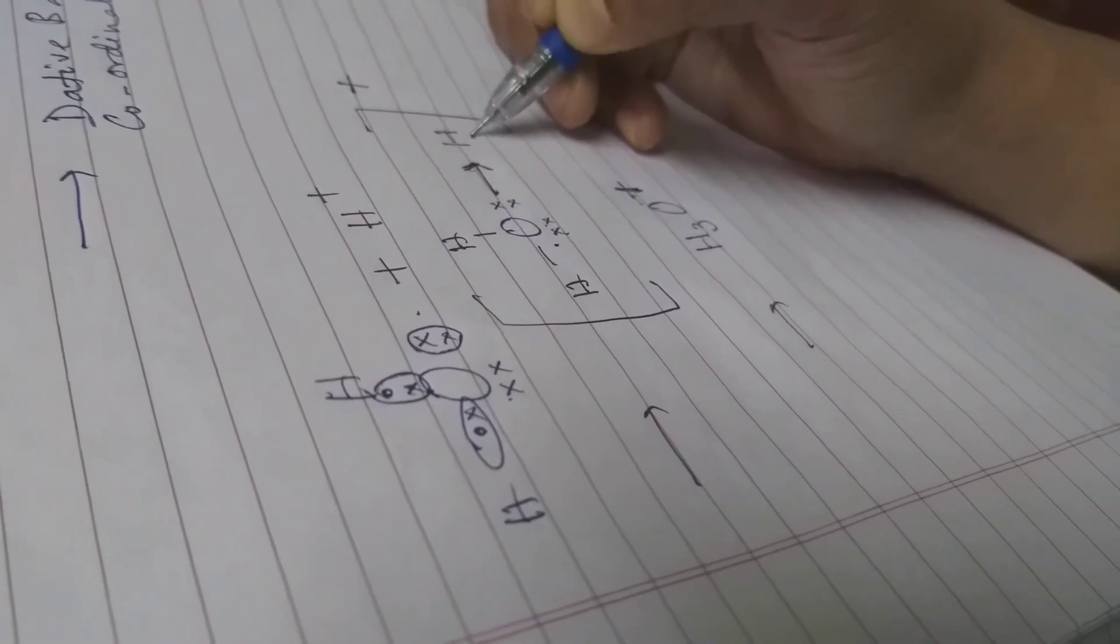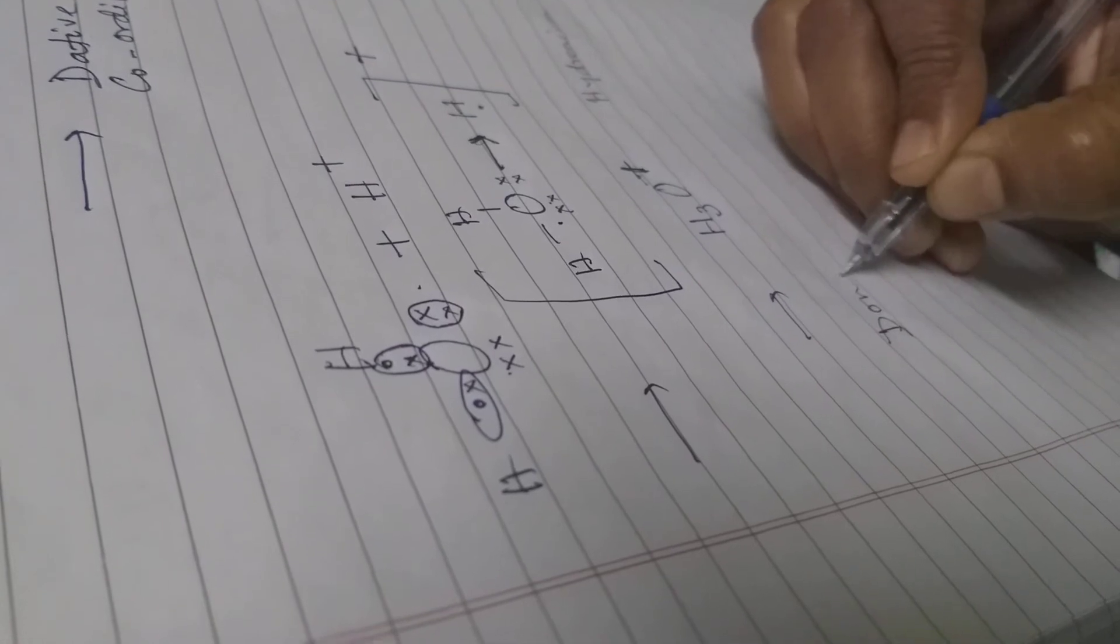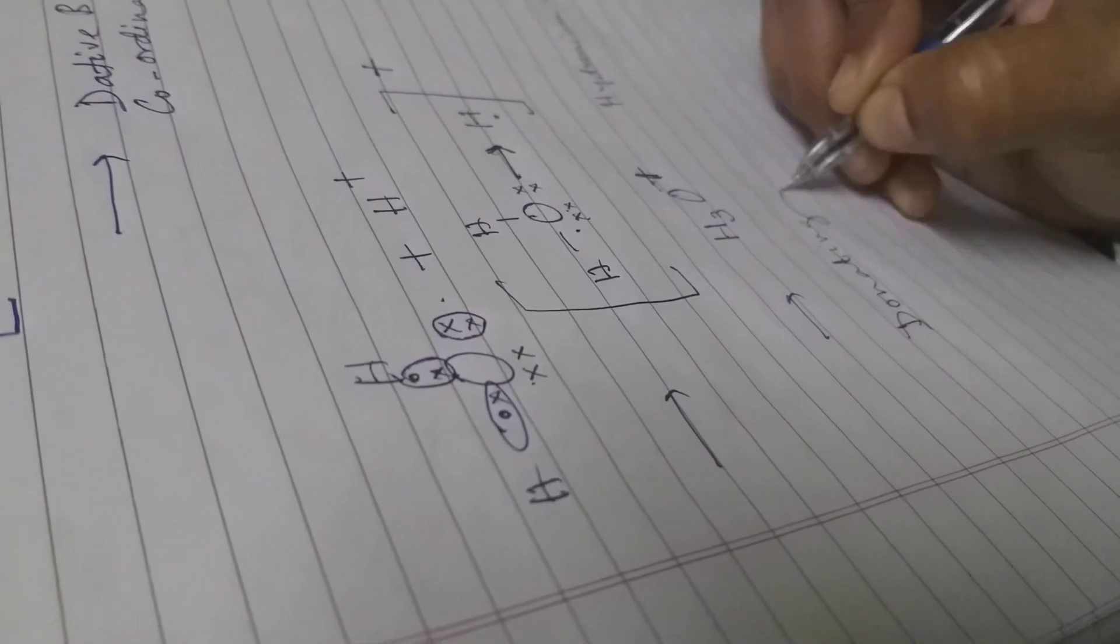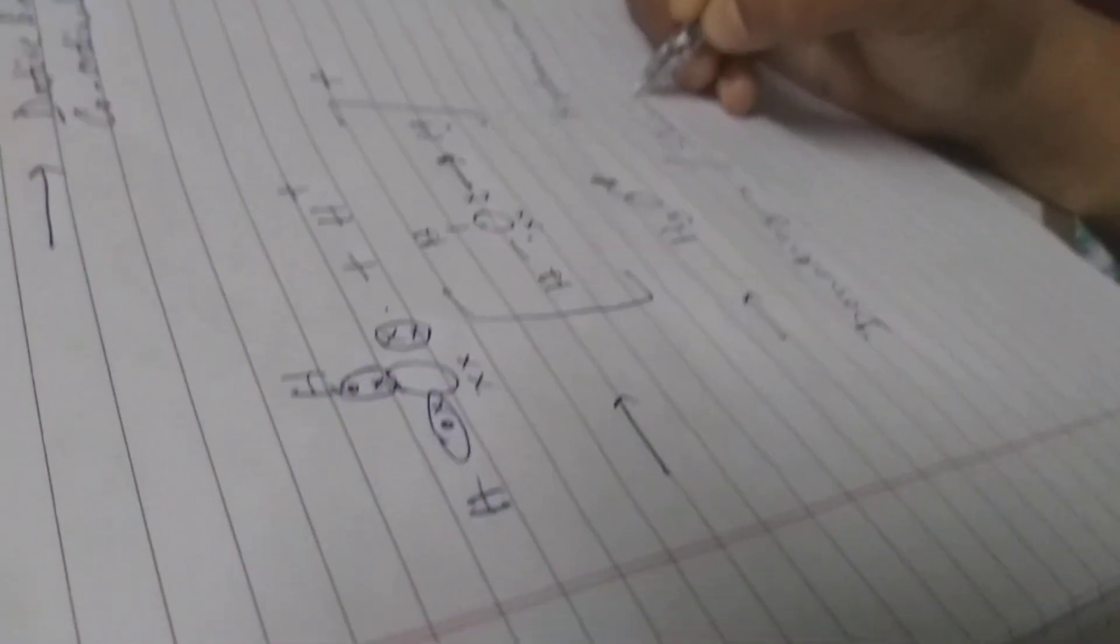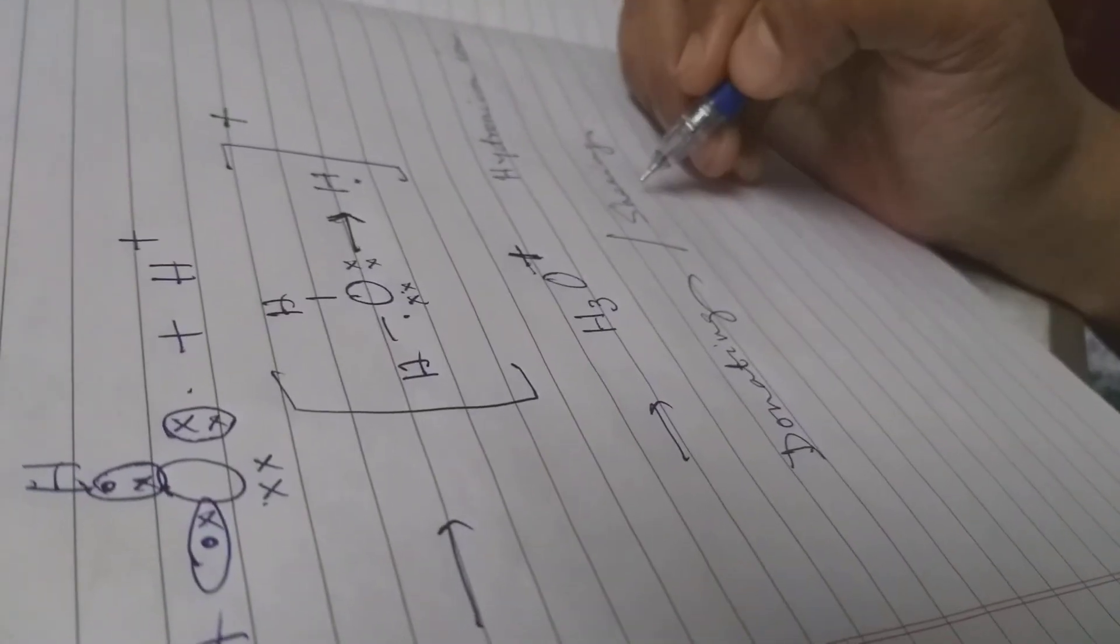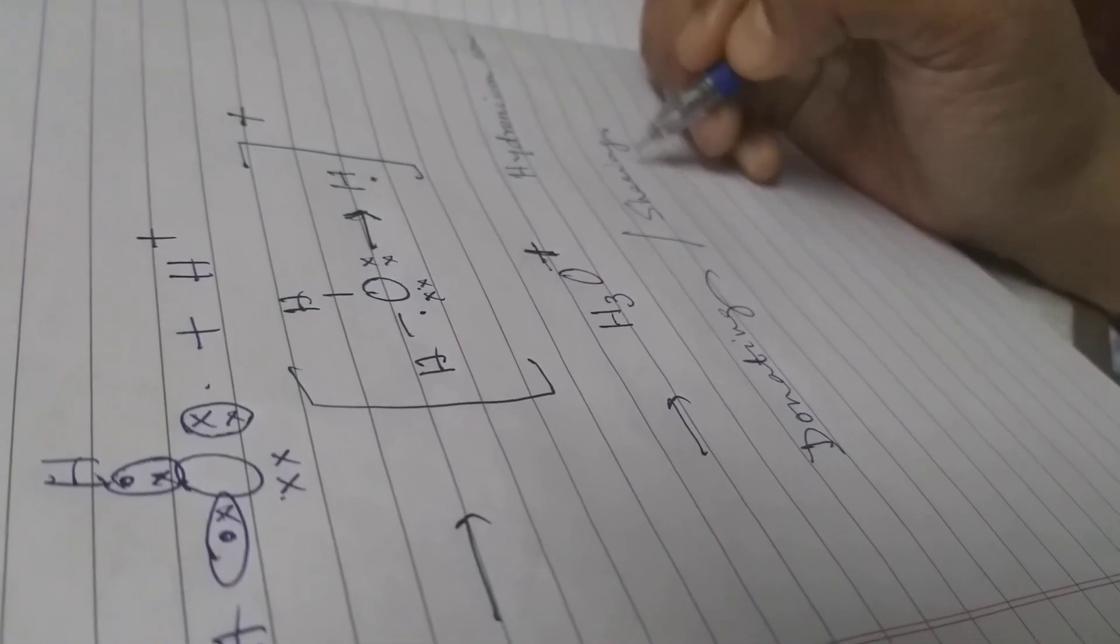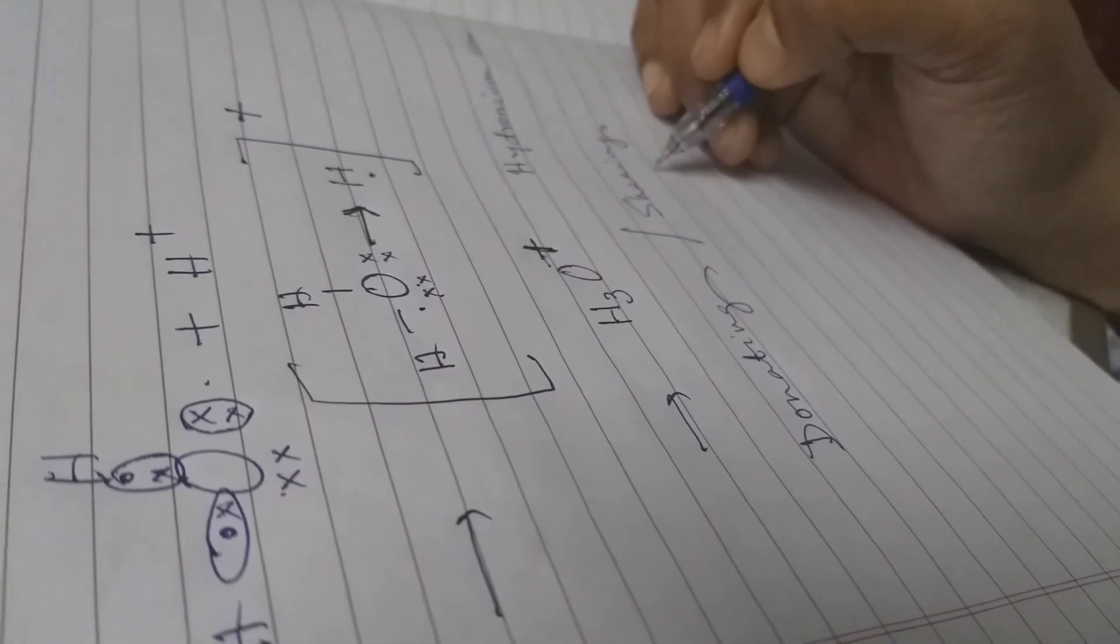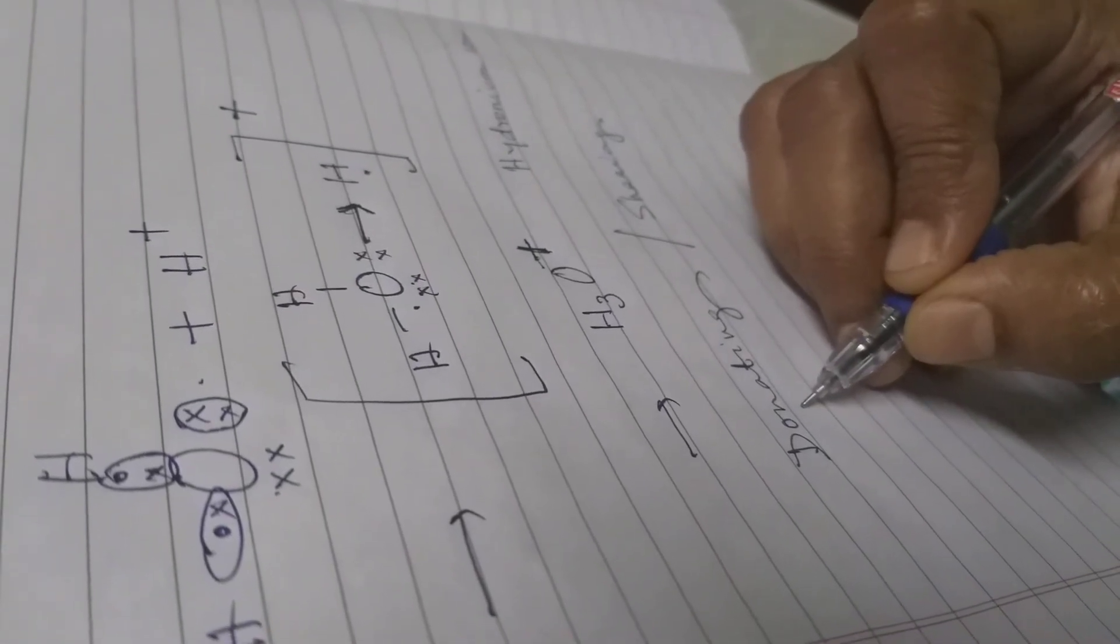Here there is no sharing but donating. You understand the meaning between the two, donating and sharing? Sharing means both of you are having equal share to that electron pair. But donating means when you are donating something to another person you have no right anymore.